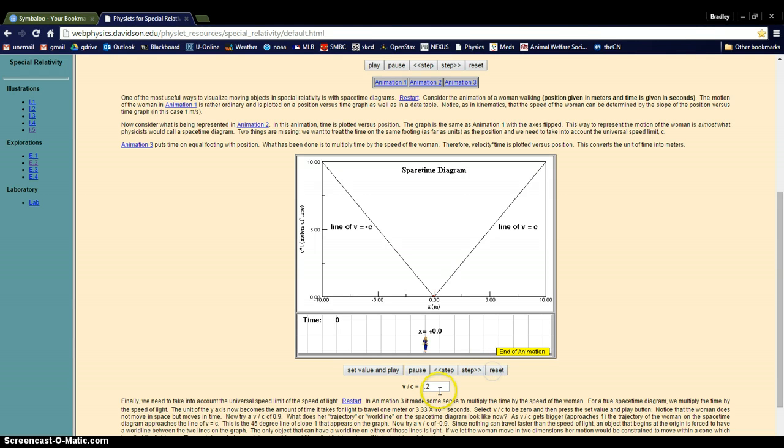So we reset this, and now let this person move at 0.8 times the speed of light. Now we see this line is beginning to get close to matching up to the light line. Since nothing can move faster than the speed of light, that means there can be no slope that is less than one, as in there can be no slope that is along this axis here.